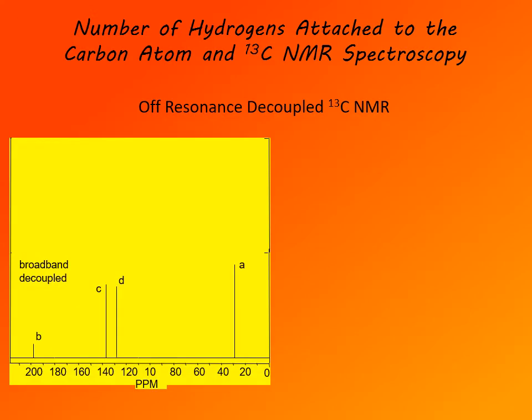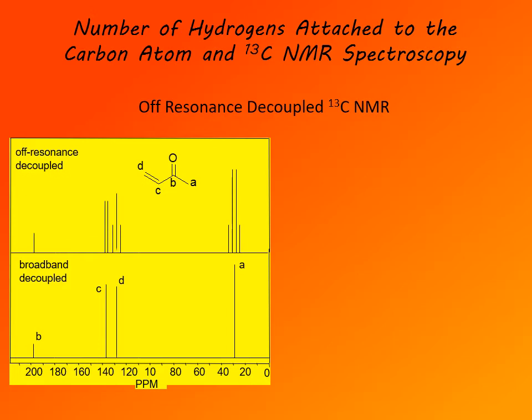It is also possible to record an off-resonance decoupled spectrum, a somewhat complex technique that allows carbon-hydrogen coupling to be preserved. Hydrogens attached to a carbon atom split that signal, and we can see the number of hydrogens attached to each carbon. This is an example using methyl-vinyl ketone — signal A is due to the methyl group. There are three hydrogens on that carbon, so the signal is split into a quartet.